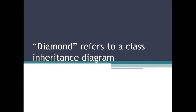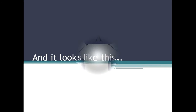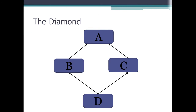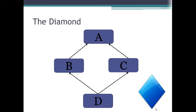When we're talking about a diamond in computer science, the diamond refers to a class inheritance diagram, and that diagram looks something like this. As you can see, we have four classes: A, B, C, and D, and as you can see they resemble the shape of a diamond. Alright, so that's what the diamond is.